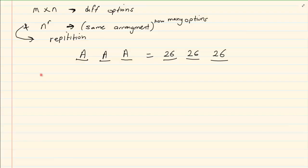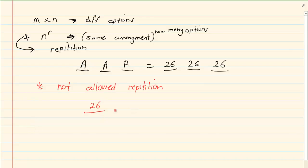But what happens when you are not allowed to repeat? So you're not allowed repetition. In other words, I have 26 options for the first one. But once I use A I can't use it again. So now how many options do I have? I have 25. Now in the third one I have already used 2. I have used my A and I have used my B. So now I only have 24 options.